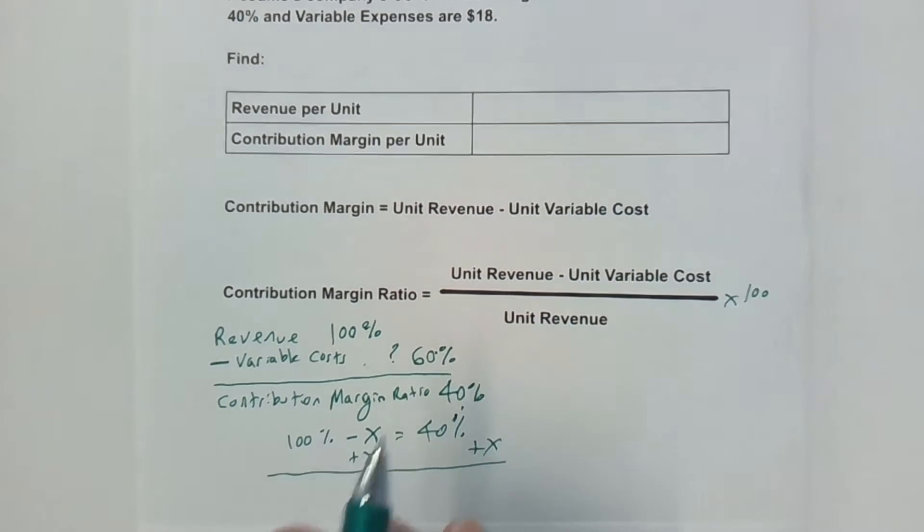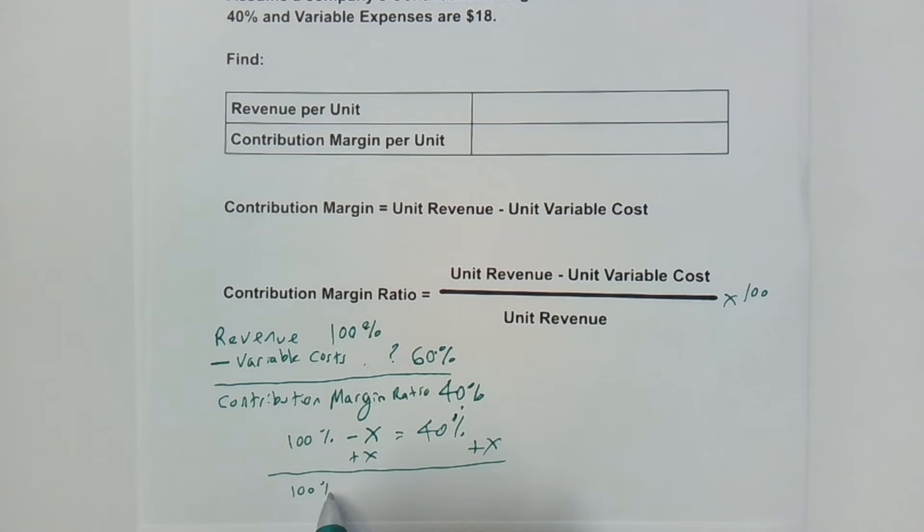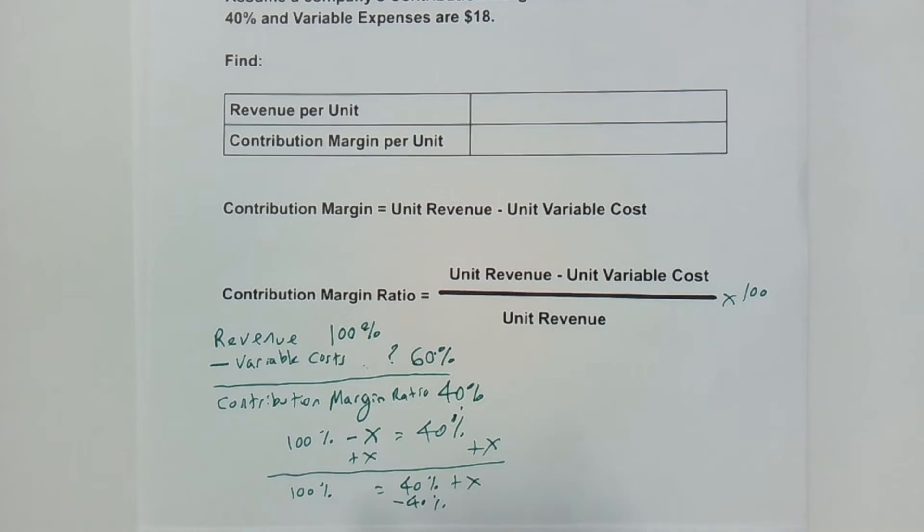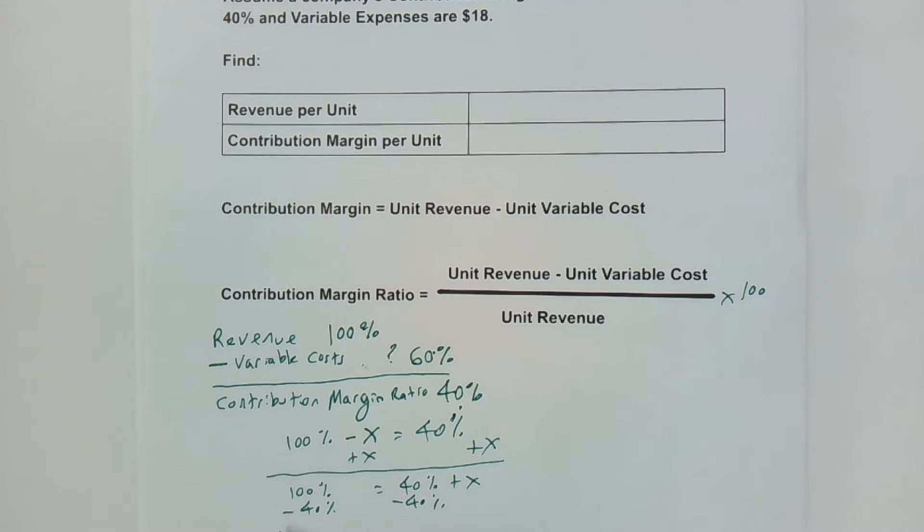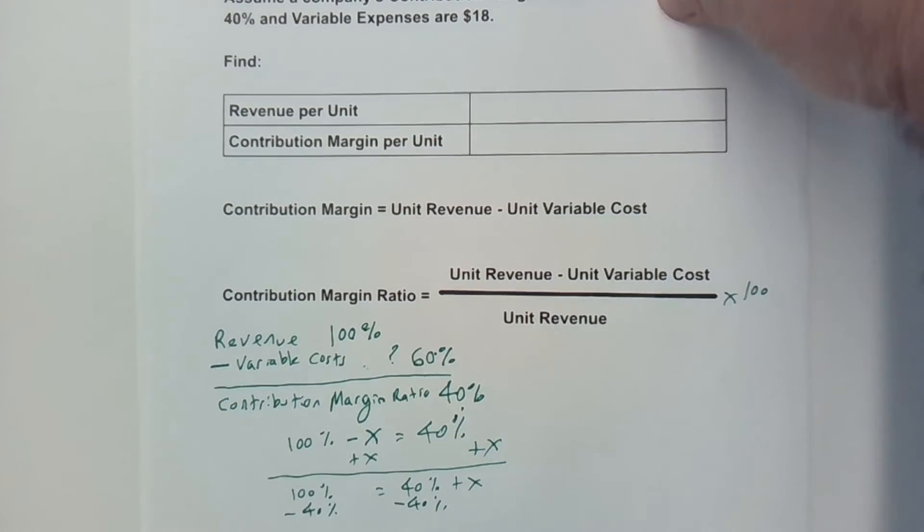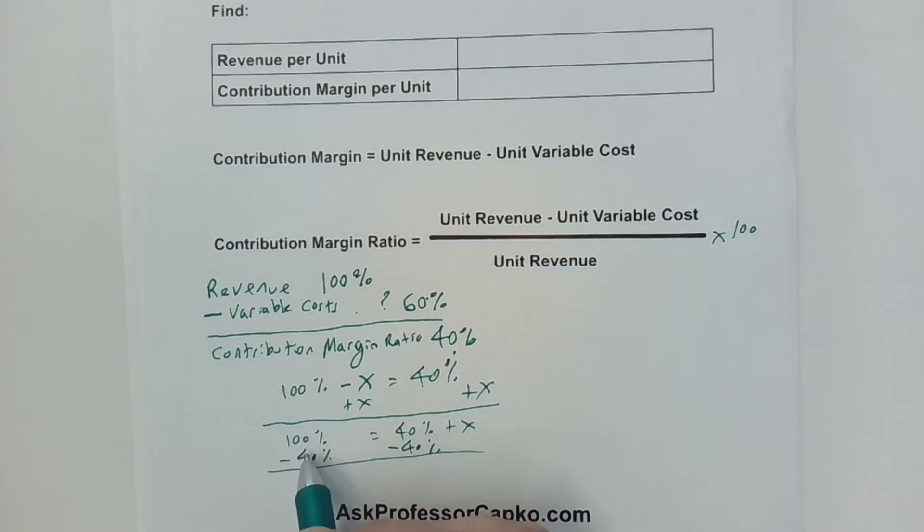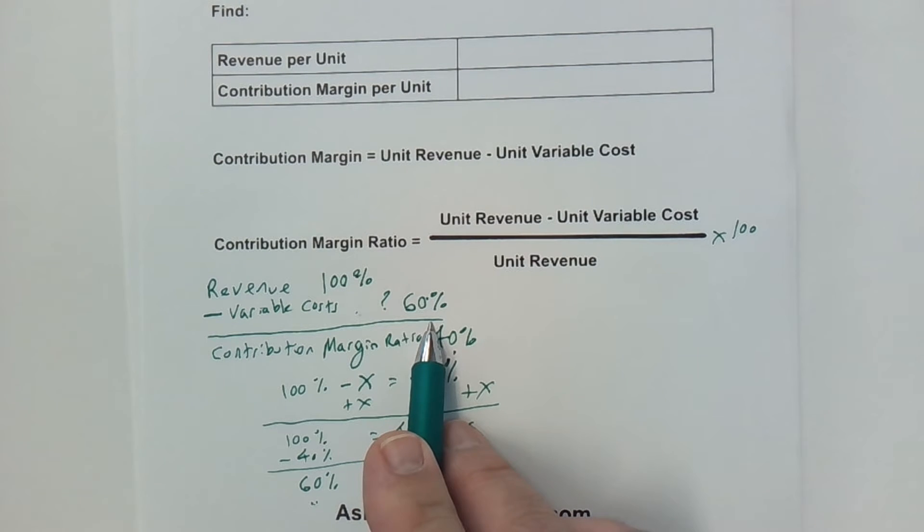We're left with 100% is equal to 40% plus X. Then I subtract 40% from both sides. If I subtract 40% from both sides, 100% minus 40% is 60%. That's our X, the part we're trying to fill in.